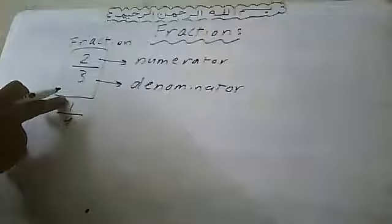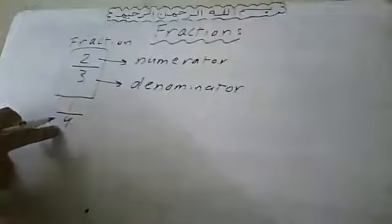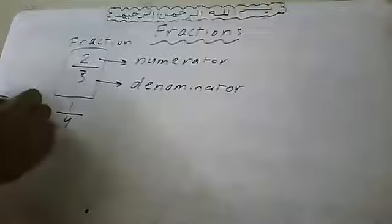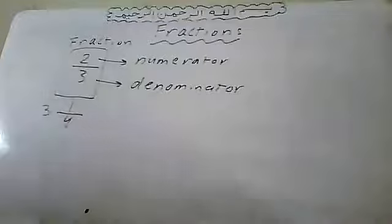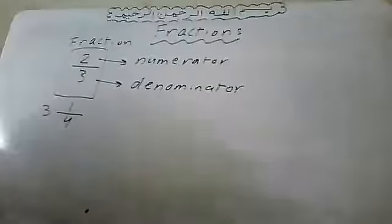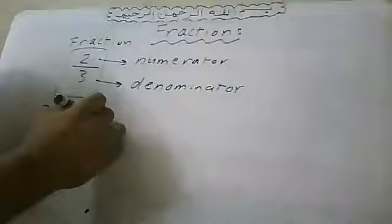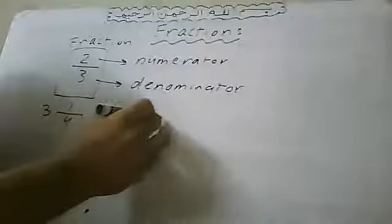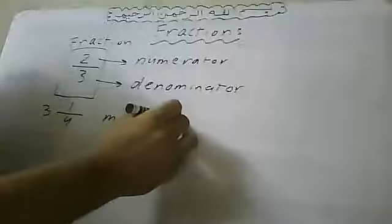For example, one over four: one is the numerator, four is the denominator, and one over four is called a fraction. If we put three next to it, it becomes three and one over four, which is called a mixed number.